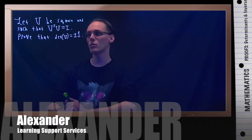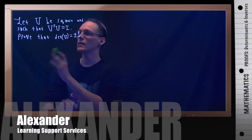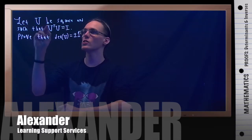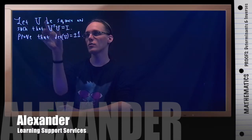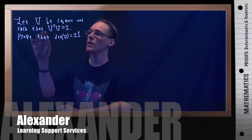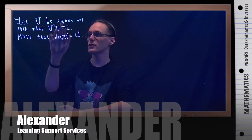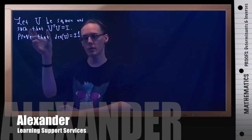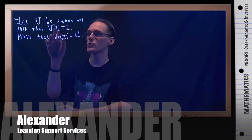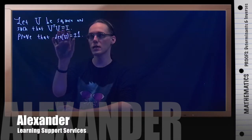In this example, we assume that U is a square matrix such that U transpose times U equals the identity matrix.